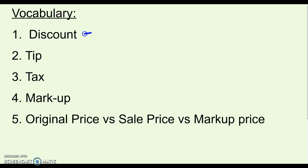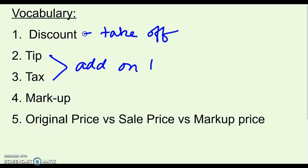A discount is when they take something off from the price — so it's on sale, or it's on clearance, or you have a coupon. It's going to make your price lower. Tip and tax add on to a price or a total. A tip is something you give for service, like tipping somebody who cuts your hair, carries your bags, or brings you your food. A tax is money that gets added on to your bill that goes to the government, so both of those make your price go up.